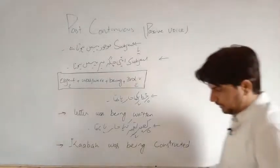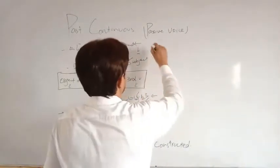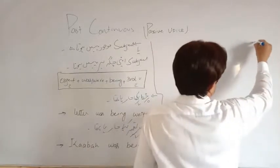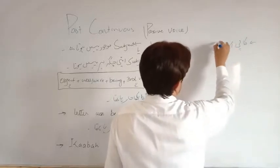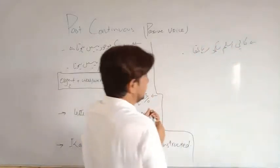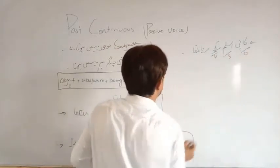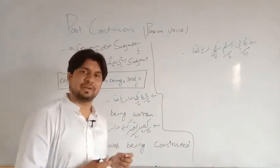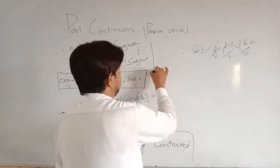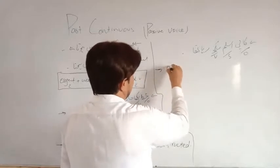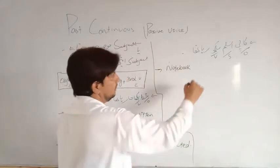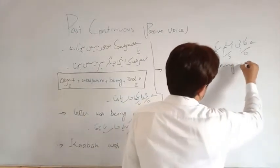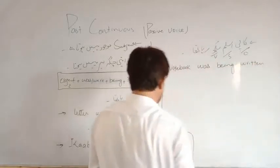یہاں پہ ایک اور جملہ لیتے ہیں: Copy اسلم لکھ رہا تھا۔ کام کیا ہے لکھنا، کون لکھ رہا ہے؟ اسلم۔ کس چیز کو؟ Copy کو۔ دیکھیں یہاں پہ subject lead نہیں کر رہا بلکہ object آ رہا ہے۔ جب بھی subject پہلے نہیں آتا تو وہ sentence passive کا ہوتا ہے۔ اس میں بھی پہلے object آتا ہے: Notebook - copy singular ہے تو was۔ Notebook was being written.